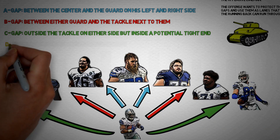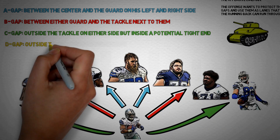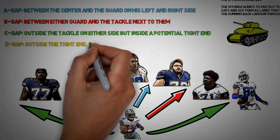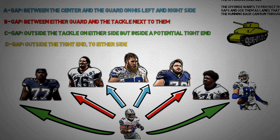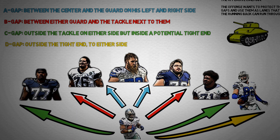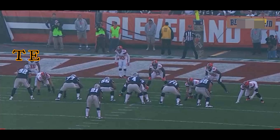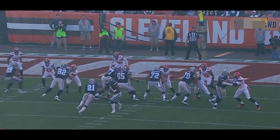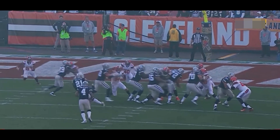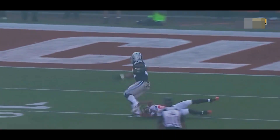Lastly, we are all the way to the outside with the D-gap, outside a potential tight end to either side of the field. On this play, you can see the tight end lined up to the far left and Elliott getting the ball from Prescott and bouncing it all the way to the outside for the touchdown.